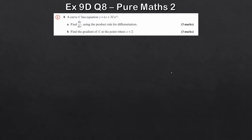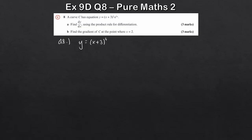The product rule applies where you have a function or equation that can be split into two different functions. For example, in question 8, we have the curve C with the equation y equals x plus 3 squared times e to the 3x. Trying to differentiate this without the product rule is quite a task, so the product rule makes life much easier.